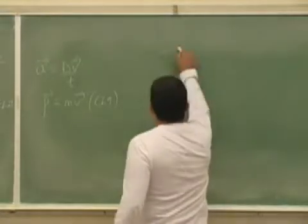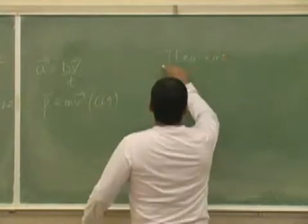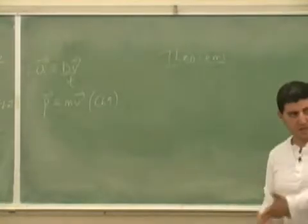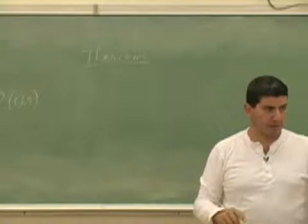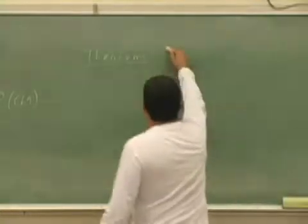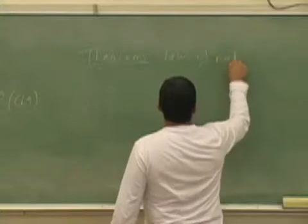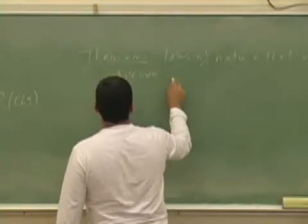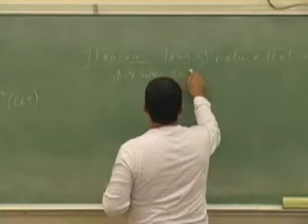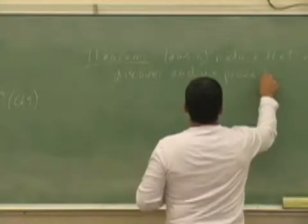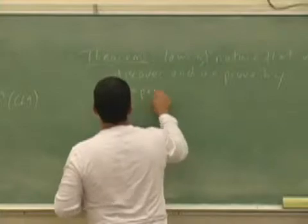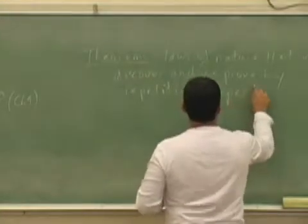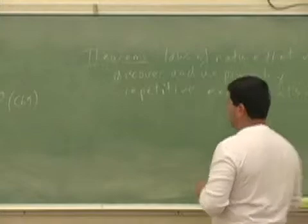The theorems on the other hand, the theorems are laws of nature that we discover and then we formulate a theorem based on that. These are laws of nature that we discover and we prove by repetitive experiments.